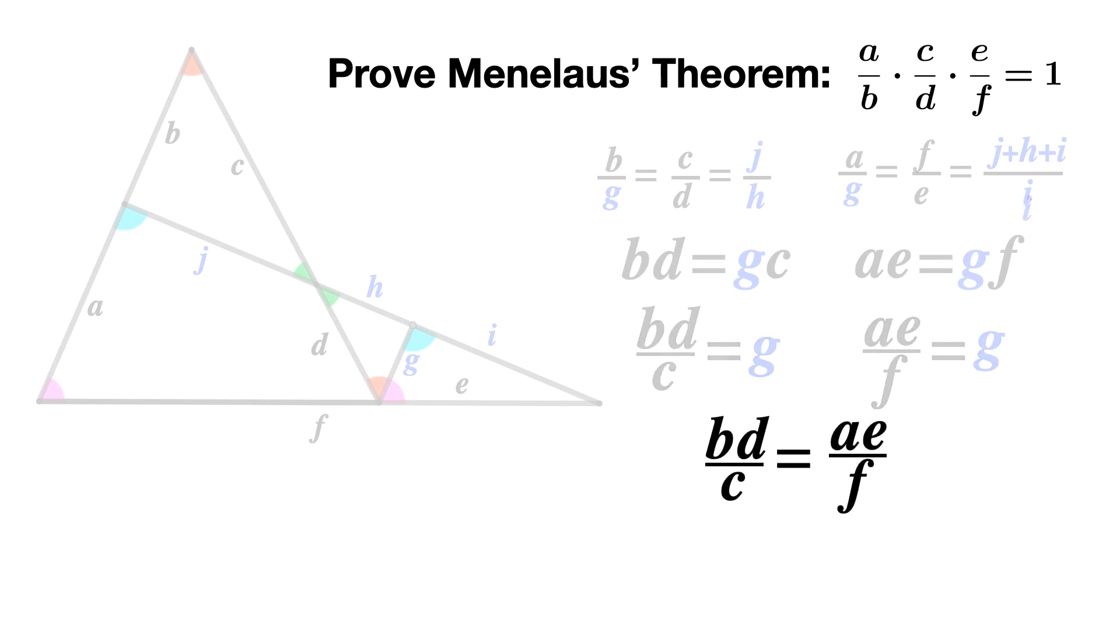Because then, we can set BD over C equal to AE over F. And once again, we can cross multiply. This results in B times D times F equals A times E times C.